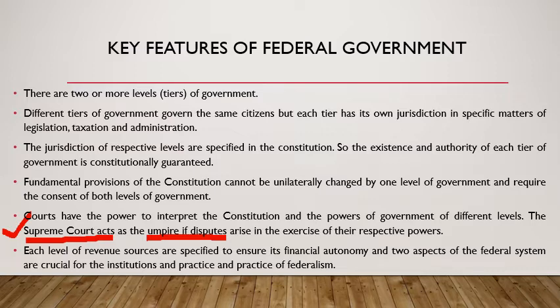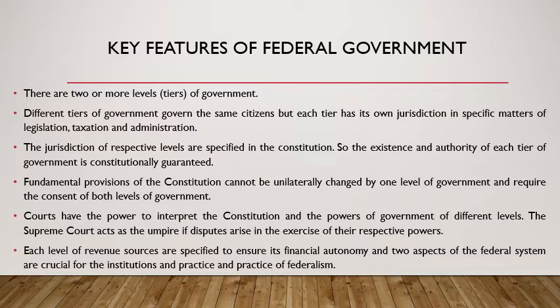Next, each level's revenue sources are specified to ensure its financial autonomy, and these two aspects of the federal system are crucial for the institution and practice of federalism. The source of income for each level of government is specified by the constitution. The source of income for the government is the revenue collected from the people of a country in the form of taxes, and the different levels of government enjoy their autonomous power accordingly.